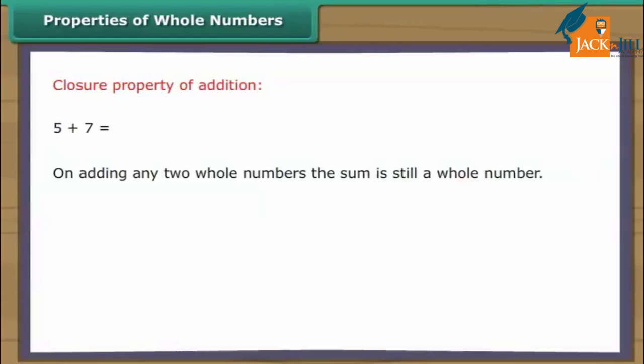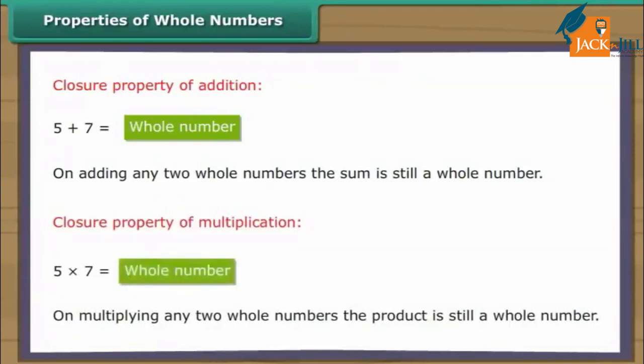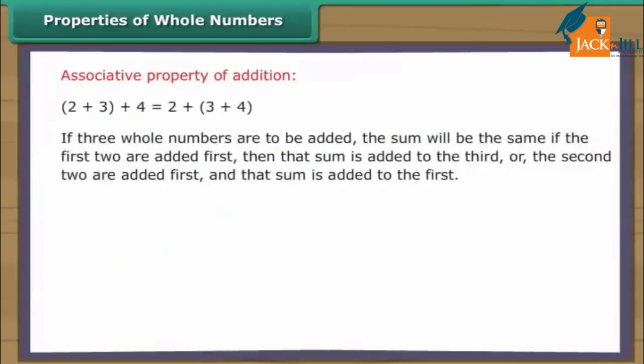Properties of whole numbers. On adding any two whole numbers, the sum is still a whole number. On multiplying any two whole numbers, the product is still a whole number. If three whole numbers are to be added, the sum will be the same if the first two are added first then the sum is added to the third, or the second two are added first and that sum is added to the first.